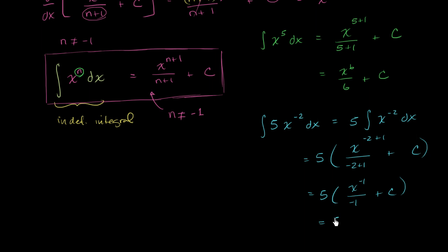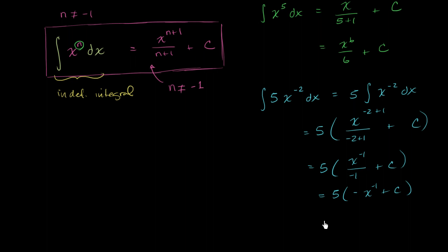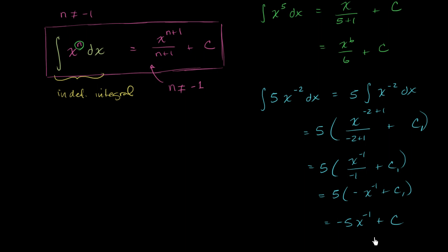And this is equal to 5 times negative x to the negative 1, plus some constant. If we distribute the 5, this is equal to negative 5x to the negative 1. Now we could write plus 5 times some constant, but this is just an arbitrary constant — so this is still just an arbitrary constant. If you wanted to show this as different constants, you could say this is c1, and 5 times c1 gives you another constant we could just call c, which equals 5 times c1. So the final answer is negative 5x to the negative 1 plus c.